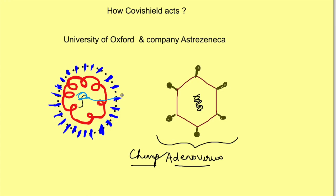What AstraZeneca did is that the genome of the coronavirus has a part which produces spike proteins. This part of the genome of the coronavirus is integrated with the genome of the adenovirus. So if this adenovirus goes into the cells of our body, then these spike proteins can be produced in the body itself.